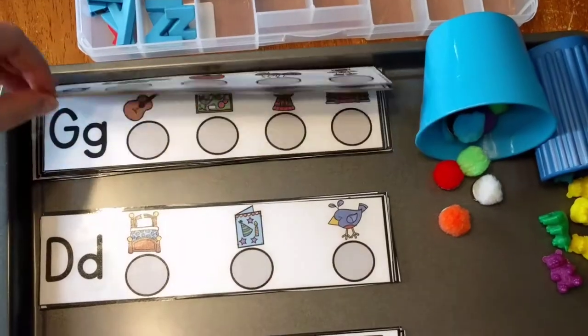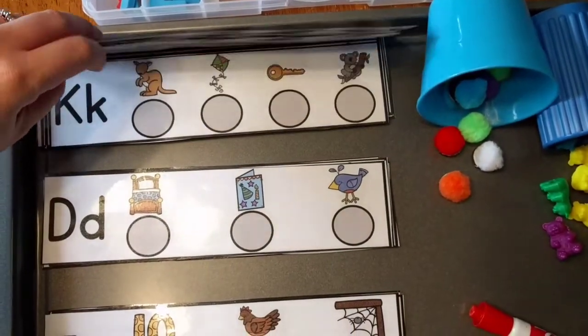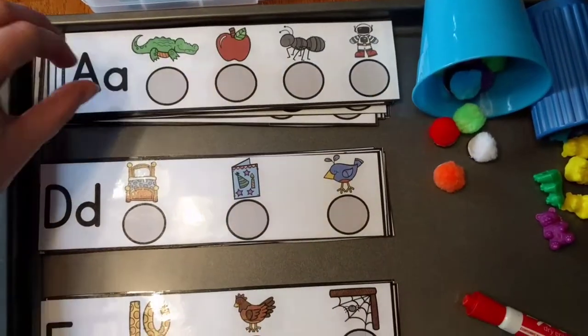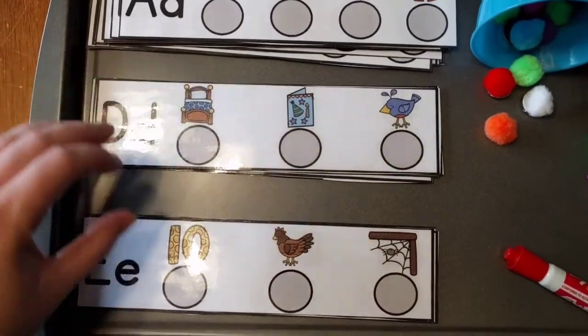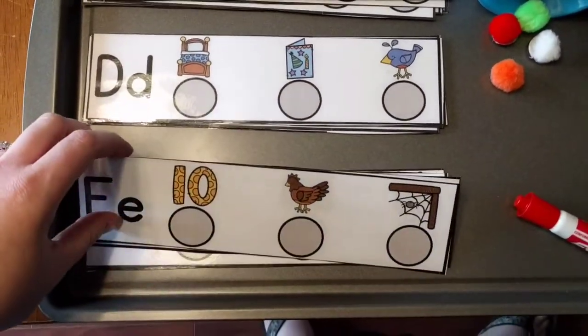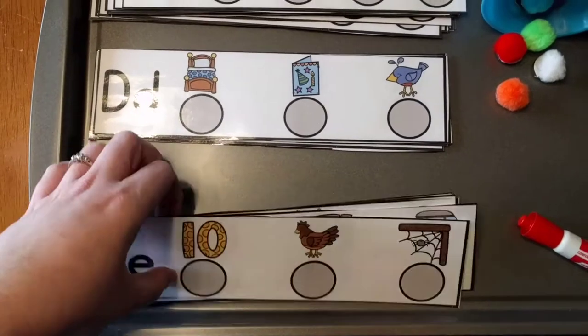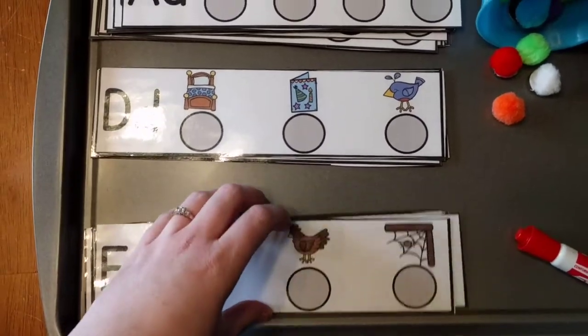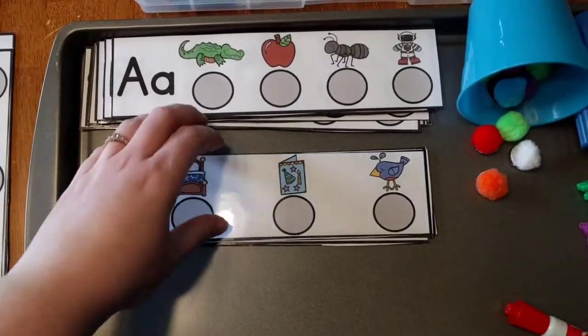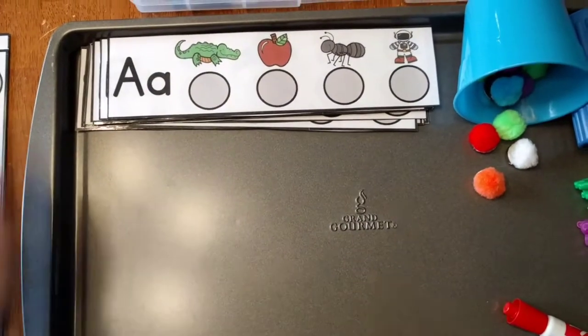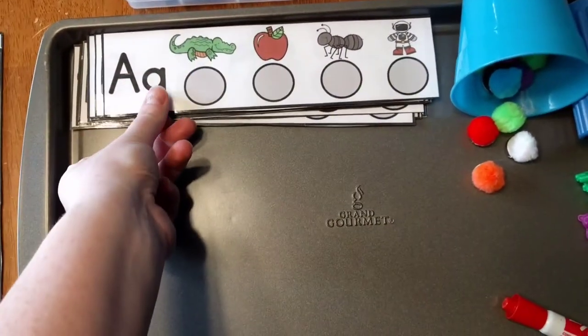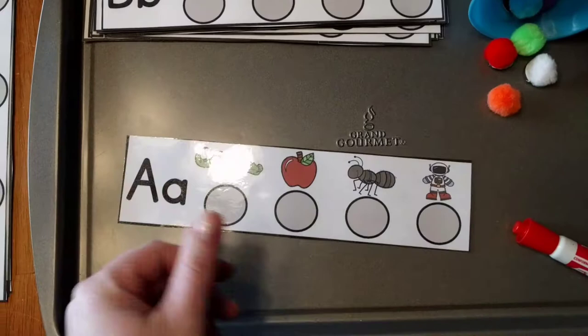They come in three sets. I have the alphabet beginning sound set, so it has every letter of the alphabet. I have a set for ending sounds, and then I have a set for vowel sounds, so these are medial vowel sounds. I'm going to start with showing you just the regular beginning sounds.